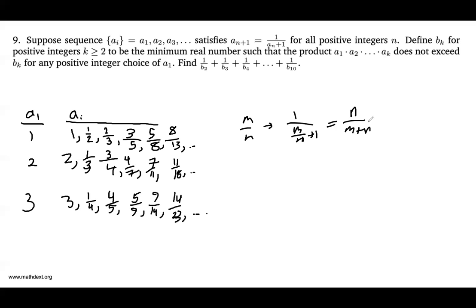All right, now let's take a look at the b's, okay? Bk is defined to be the minimum real number such that the product a1 times a2 times dot dot dot times ak does not exceed bk for any positive integer choice of a sub 1. And to experiment, why don't we try to find b2, for example?